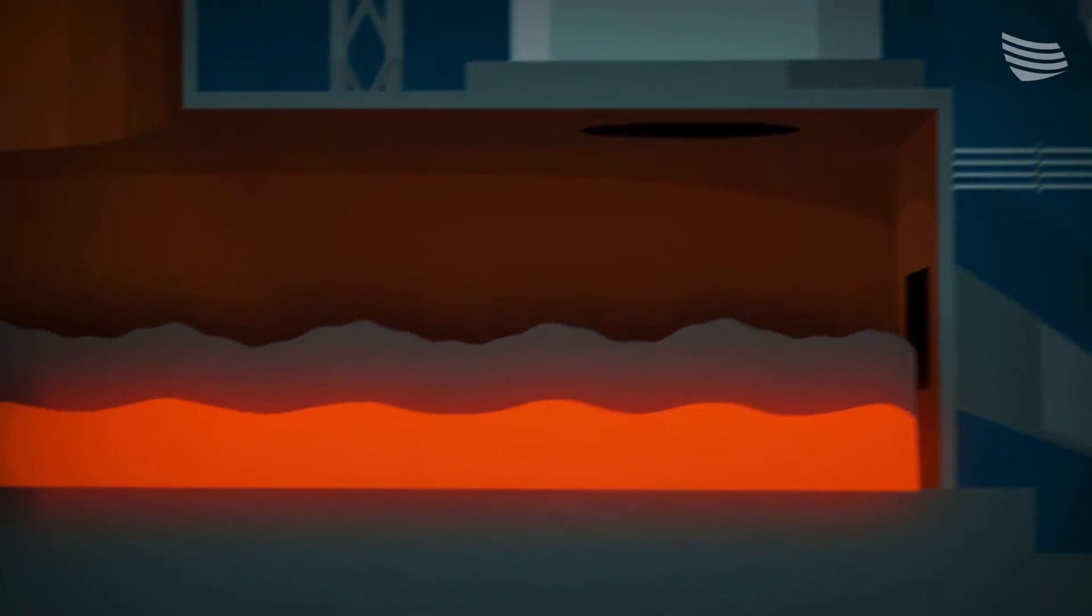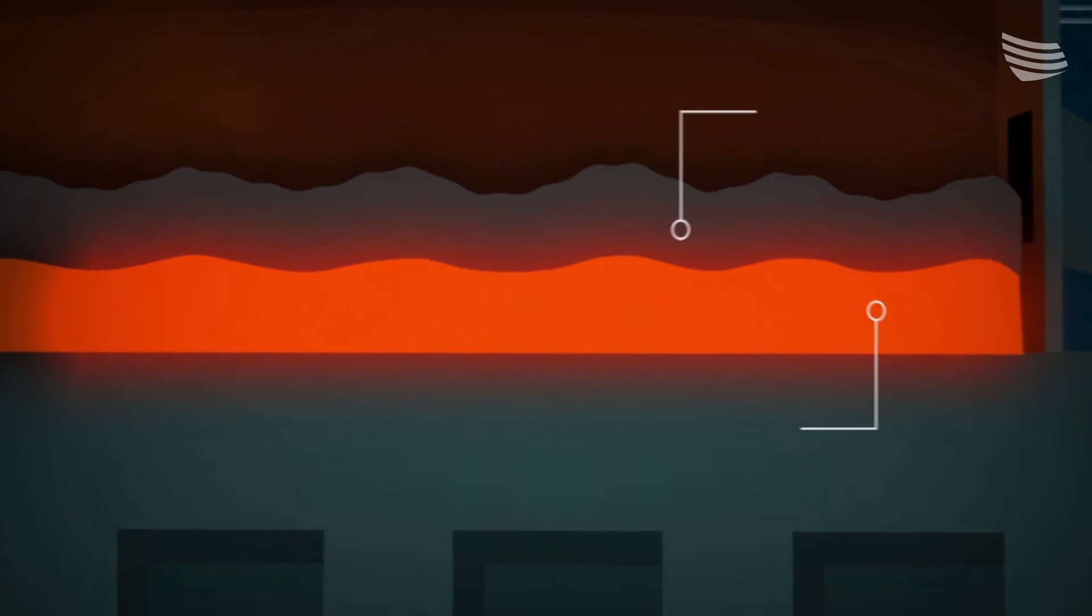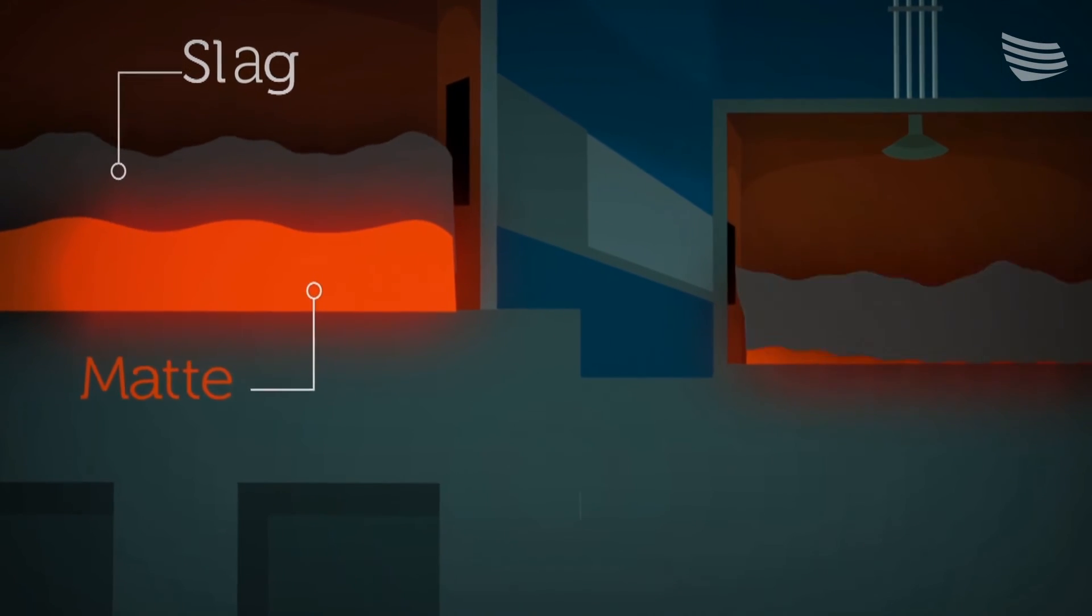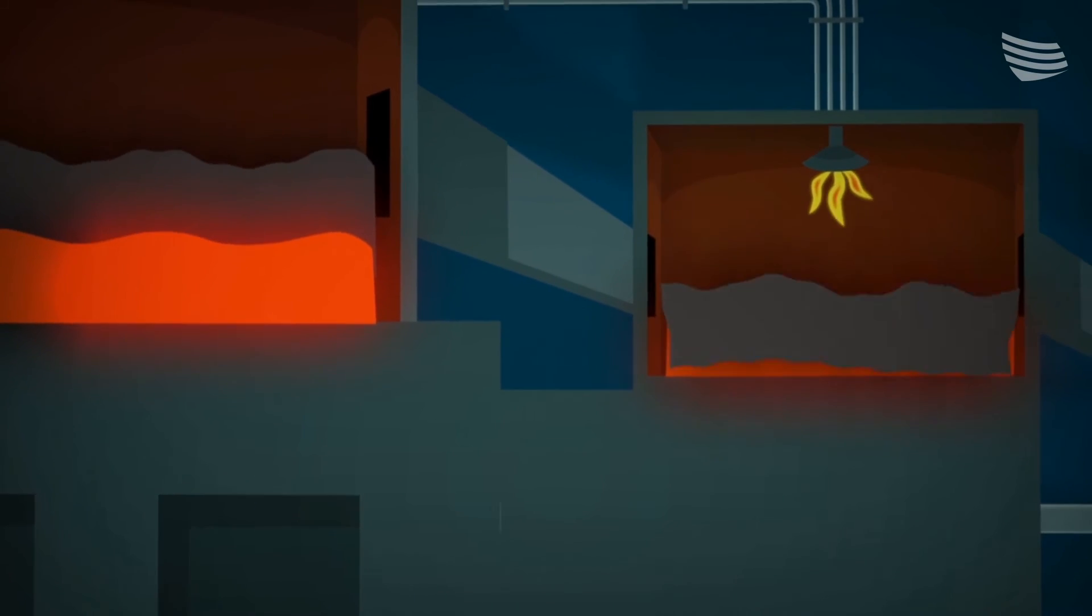Back to the flash furnace. At the bottom, the melted concentrate separates into slag and mat, which have different densities like oil and water. The slag, mainly iron, floats on top.